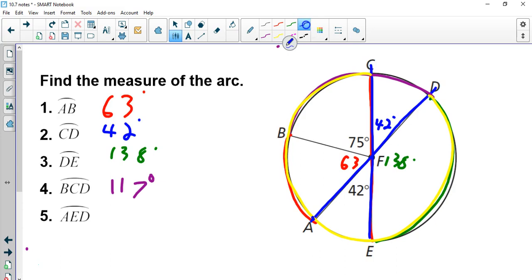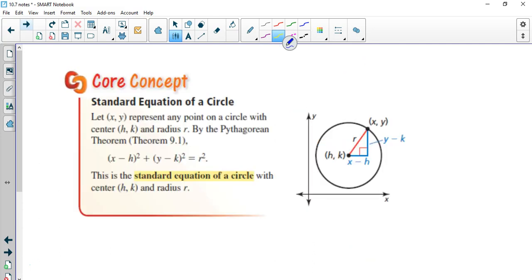And let's go on to AED. AED starts here and goes around to D. So that's 138 plus 42. If we add those together, we're going to have a semicircle, right? 180 degrees.